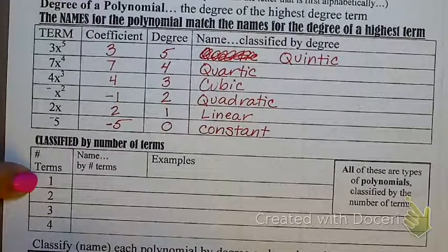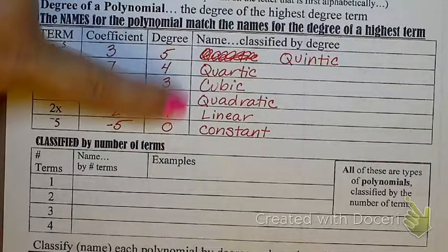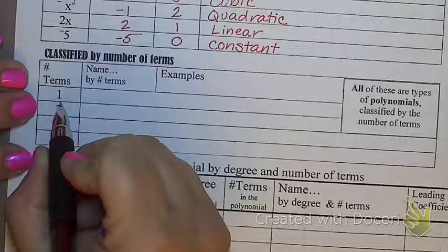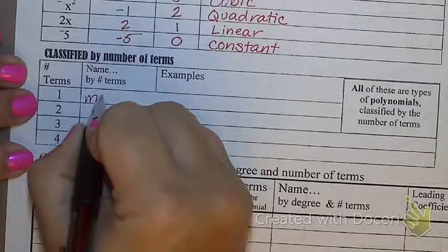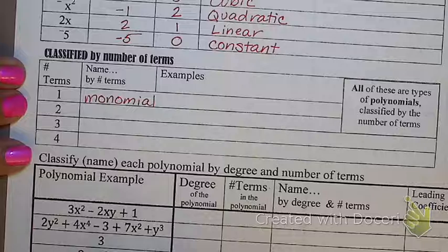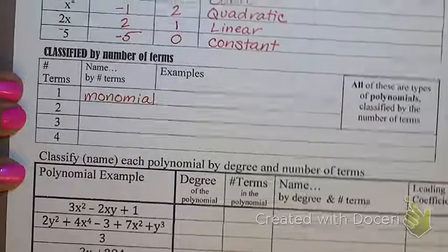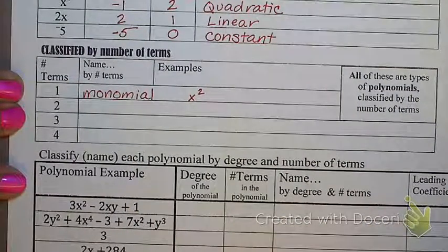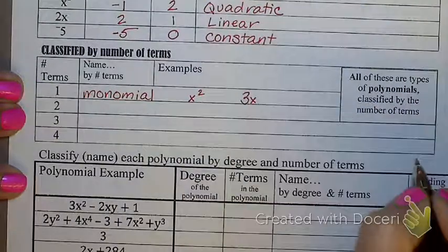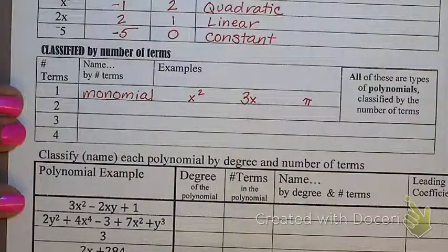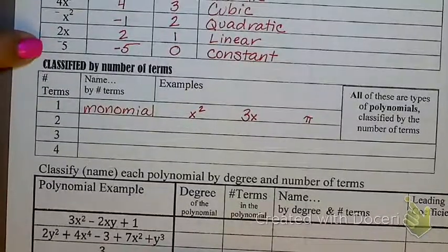Now, let's talk about if I didn't want to classify it by the degree, we'll say that's the first name of a polynomial. Now, we're going to do the last name. Let's do the number of terms. If I have one term in a polynomial, do you know what it's called? Starts with an M. A monomial. Mono being one. Monomial being number or term. So, an example, X squared is a monomial. 3X is a monomial. Pi would be a monomial. Just one number, one term all by itself. All of these guys in this chart above, those were all monomials.